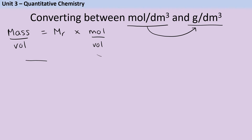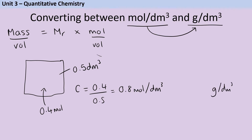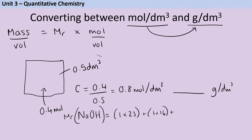Let's see what this looks like in practice. Say I have a box of volume 0.5 dm³ into which I dissolve 0.4 moles of solute, giving a concentration of 0.4 ÷ 0.5 = 0.8 mol/dm³. Now if my solute is sodium hydroxide, its Mr = (1×23) + (1×16) + (1×1) = 40 g/mol. Multiplying the concentration by 40 gives 32 g/dm³.